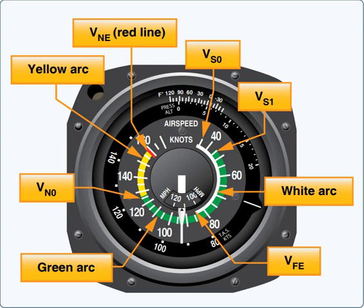The radial red line near the bottom of the green arc indicates VMC, the minimum indicated airspeed at which the aircraft can be controlled with the critical engine inoperative. The radial blue line indicates VYSE, the speed for best rate of climb with the critical engine inoperative.